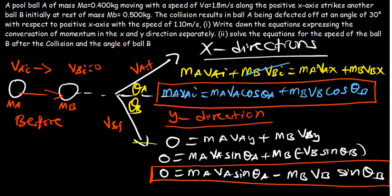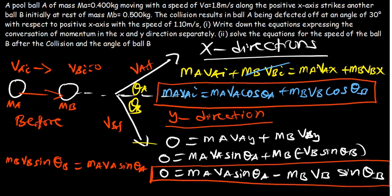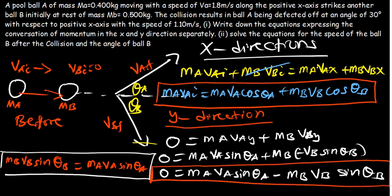If I shift the negative term to the left-hand side, I can also write the y-axis formula as: MB·VB·sin(theta B) = MA·VA·sin(theta A). You can use either form — they are equivalent. This is the formula for the y-direction.